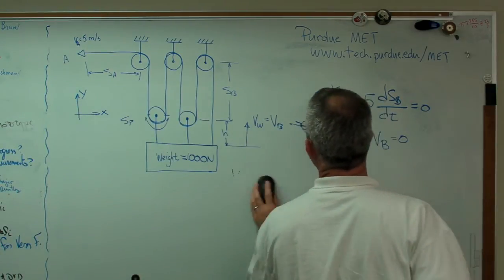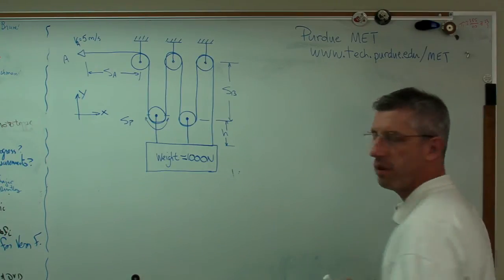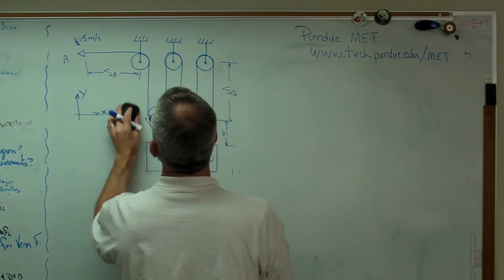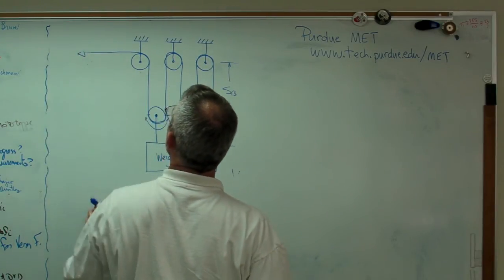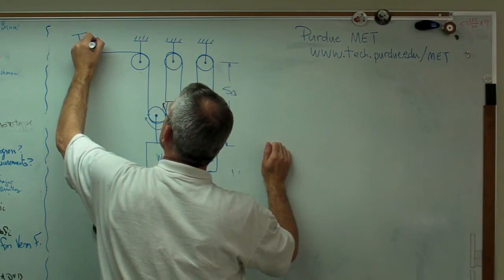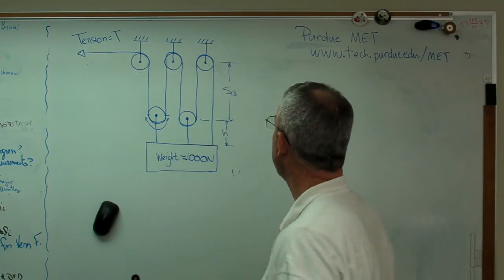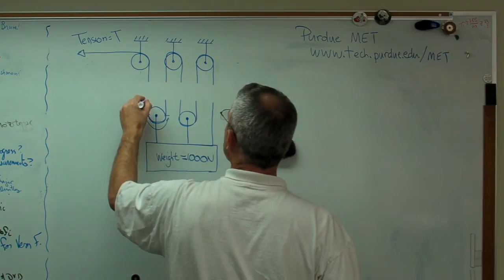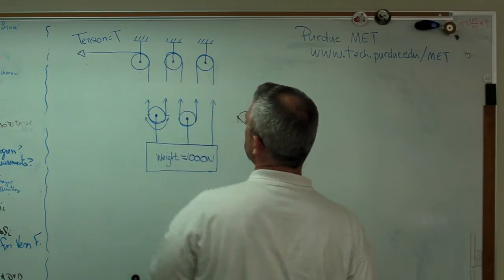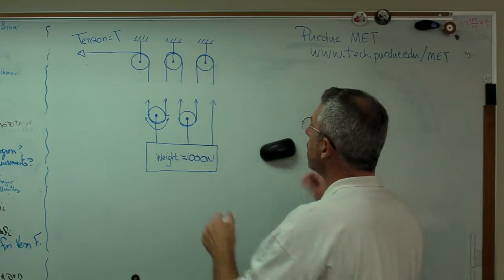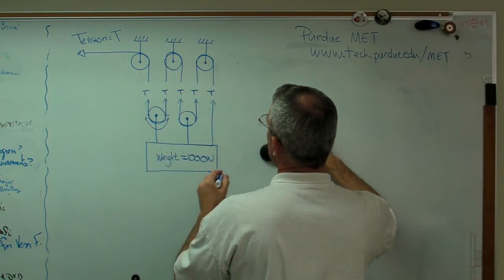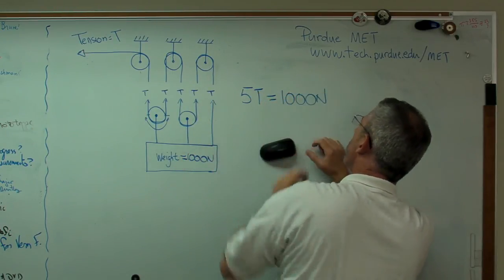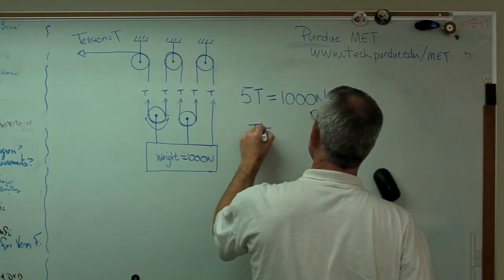Well, if we're doing statics, I can make a cut anywhere I want. The force in the rope is the tension, which we'll call T. Let me put a fictitious cut right there. Assuming the pulleys are frictionless, there are five rope segments carrying tension T across that cut, so five T equals 1,000 newtons. That means T must equal 200 newtons.